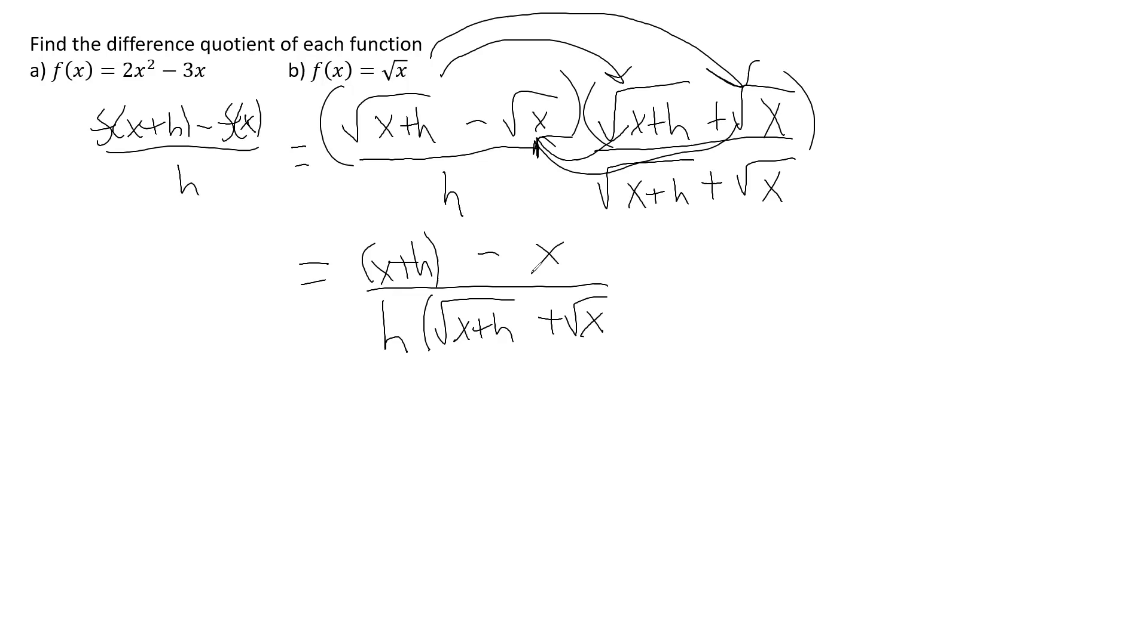And that's going to be subtracted. So it'd be minus x. Now, the x's in the numerator cancel, and you would have h over h times the square root of x plus h minus square root of x. The h's cancel. Now, be careful here. The numerator needs a 1, because h divided by h is essentially 1.